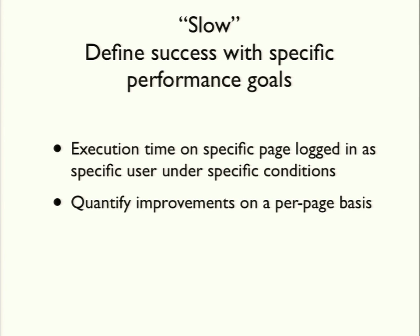What I like to have is success defined by execution time on a specific page, logged in as a specific user, under specific conditions. For example: 'User Steve will log into this page under this condition and it will take one second or less to execute.' That's how we know when we've reached our performance goal. Two people can look at the page execution time and agree — either it's one second or below, or it's not. By quantifying things this way, we can quantify our improvements on a page-by-page basis, demonstrating before-and-after results for stakeholders.